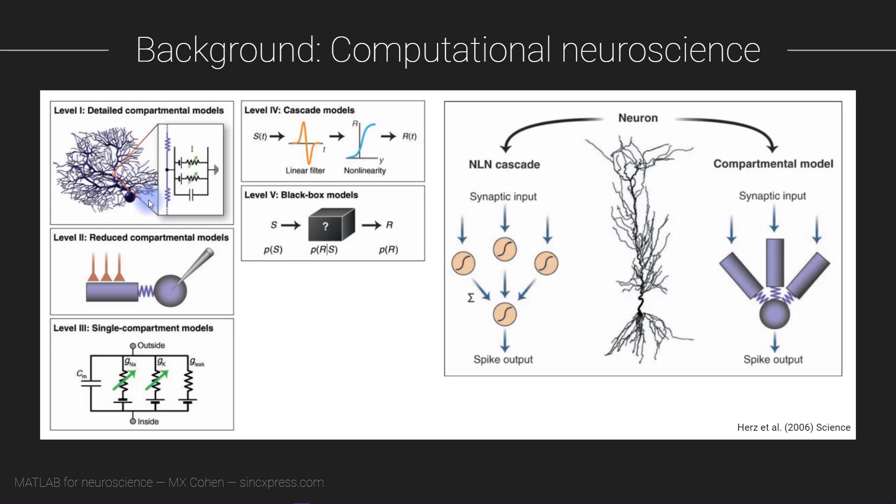Now computational neuroscience is a really big field and it varies quite a lot in its granularity, from super highly detailed compartment models of individual neurons all the way up to more abstracted or conceptual models of systems and processes.